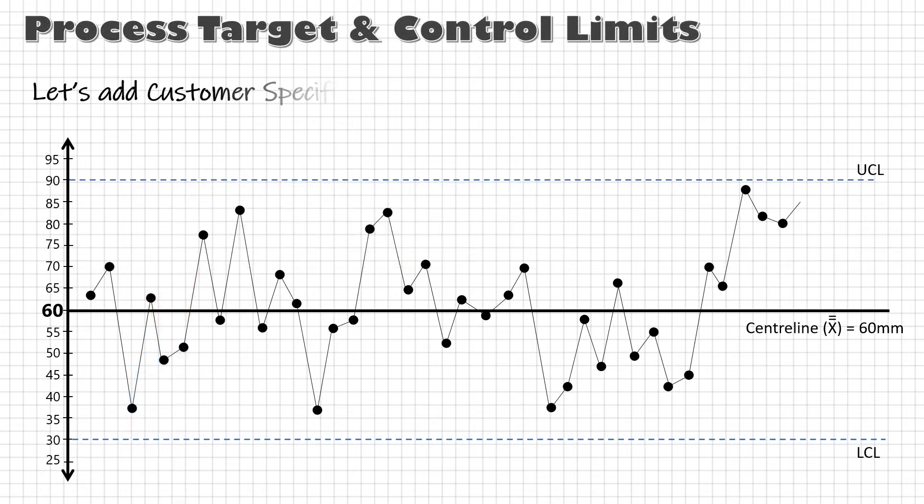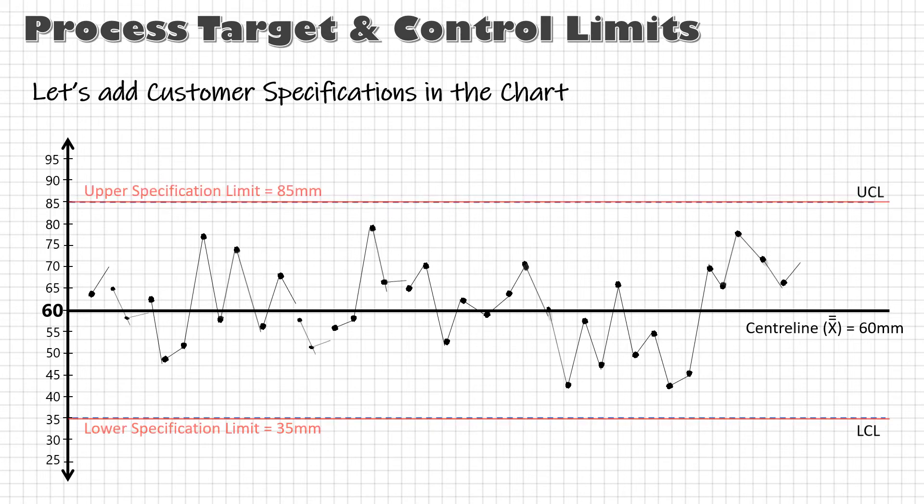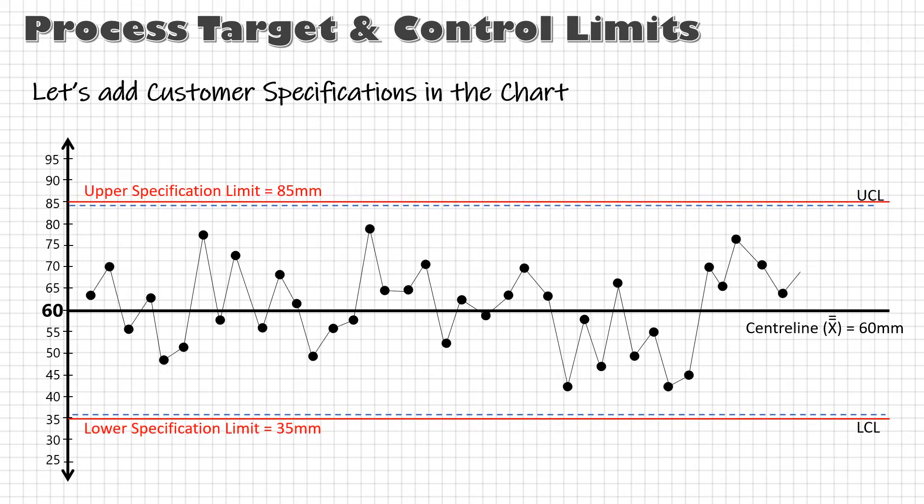So, we plot two more lines that is upper specification limit and the lower specification limit. Now, if these lines are within control limits, our process is producing defects. If these lines are on the control limits, we are still producing defects.